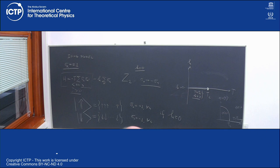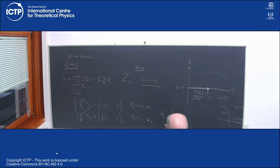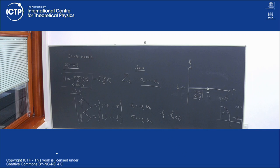Below Tc, the energetic considerations take over and the system prefers non-zero magnetization. The good question is how the system chooses the direction. A conclusion comes immediately: at any H non-zero, we have no phase transitions at all — no continuous phase transitions. The phase transition can only occur at zero magnetic field, specifically on the line T less than Tc at H equals zero.